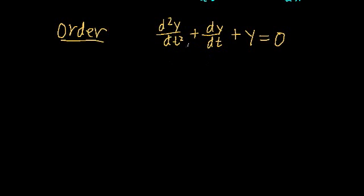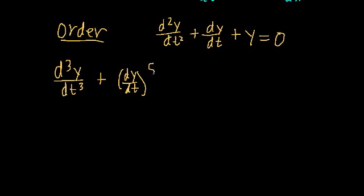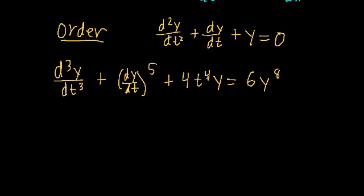It's important not to mix up derivatives and exponents. For example: the third derivative of y with respect to time, plus the first derivative of y raised to the fifth power, plus 4t^4 times y equals 6y^8. We have exponents on the function, on the independent variable, and on a derivative — but the order of this differential equation is still three, third order. The highest derivative we take is a third derivative. Even though we raise a derivative to an exponent, we're concerned about the derivative order, not the exponents.